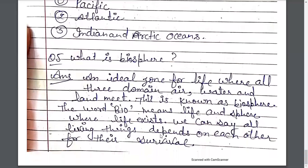What is biosphere? Jem Mandal kya hai? An area or zone for life where all three domains — air, water, and land — meet is known as biosphere. The word 'bio' means life and sphere means where life exists. We can say all living things depend on each other for survival. Sthal, Jal, Vayu — yeh sabhi jeevan ke liye atyavashyak hain. Inke milan sthal ko Jem Mandal kehte hain, kyunki yahan teenon miltay hain, vohan par jeevan ka adhar bantay hain. Bio shabd ka arth jeevan tatha sphere ka arth hona hai. Prithvi par rehne wale sabhi prani Jem Mandal ka hi abhinang hote hain. Thank you.